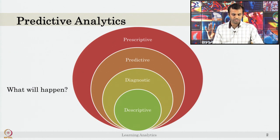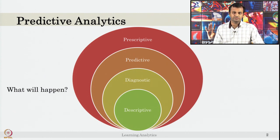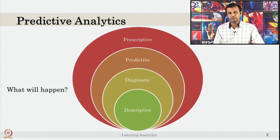You can use that relationship to predict future events — that is called predictive analytics. Predictive analytics also subsumes diagnostic analytics and descriptive analytics. Always remember the first step is doing descriptive analytics: looking at the figures, checking the outliers, and seeing if there is a relationship from the plot.